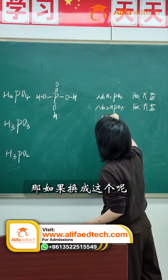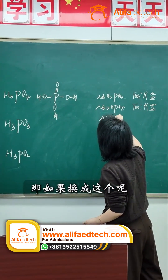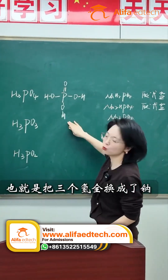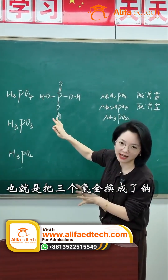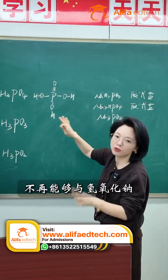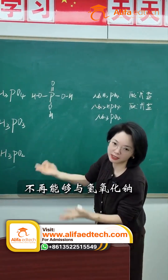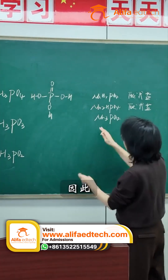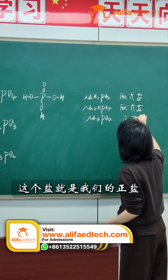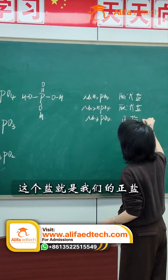Now, what if we replace this one too? That means all three hydrogens have been replaced by sodium. At this point, there are no hydroxyl groups left — it can no longer react with sodium hydroxide. Therefore, this salt is a normal salt.